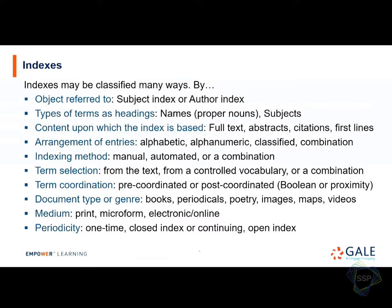Term coordination is a more complex topic. It has to do with pre-coordination — meaning you have main headings and subheadings already created in the index, as in back-of-the-book indexes or Library of Congress subject headings with a main heading and a subheading. More common is post-coordination, where the end user combines index terms in a Boolean search or guided advanced search. And then topic, document, or genre can vary; medium — print or electronic; and periodicity — is it a one-time closed index for a book, or something continuing and ongoing like periodicals?